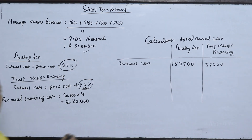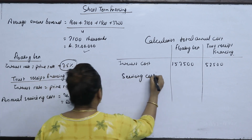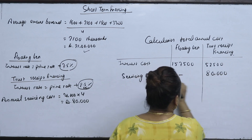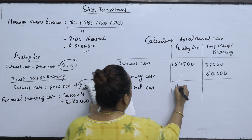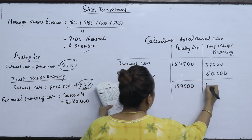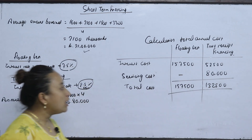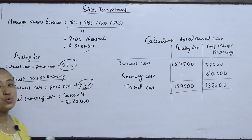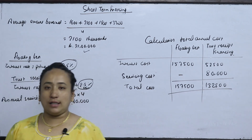For trust receipt financing, there is also the servicing cost of 125,000, bringing the total to 425,000. After comparing total annual costs of both options, the total cost comes out to be the same. Therefore, the company does not need to switch its financing method — the decision is to stay with the current arrangement.